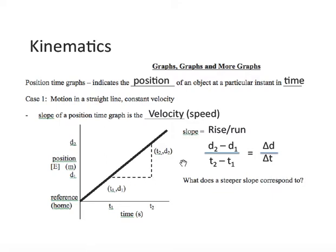The rise is the change in position. Final position d2 subtract the initial position d1. That's displacement. The run is the change in time. Final time subtract the initial time. That's delta t. So the slope of a position-time graph is the velocity.